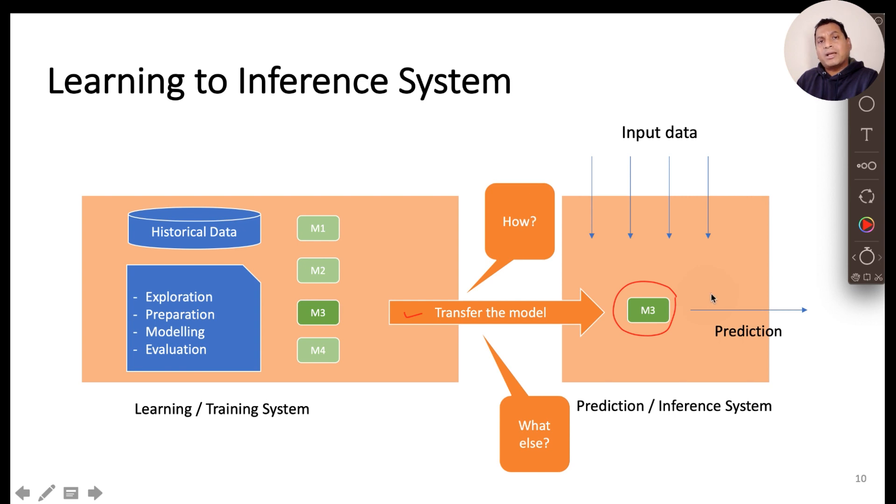And do those constraints have any impact on the model training process? Do we have to take those constraints into account while building the model on the learning system? Or do we only build the model on the learning system purely based on the accuracy expectation and then take care of those constraints on the inference system alone? We will dive deeper into these constraints in the subsequent video.